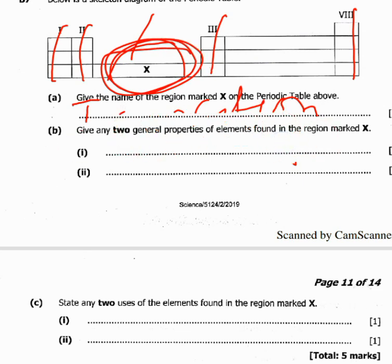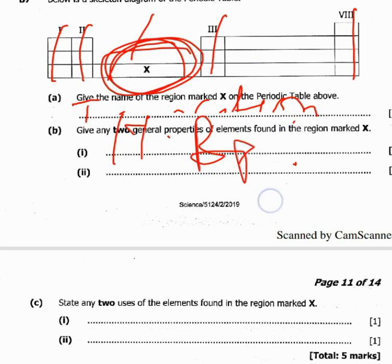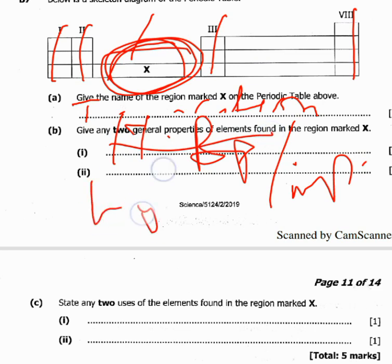We come to part B, which says: give any two general properties of elements found in the region marked X. The first property is they have a high boiling point and high melting point. The second property is they have high densities. High densities is another general property of transition elements.